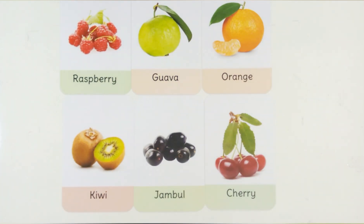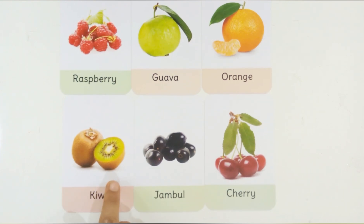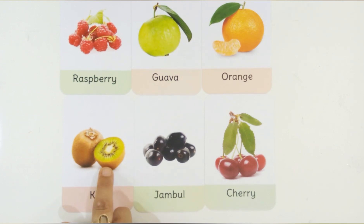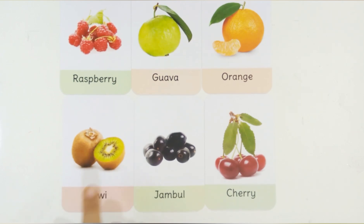This is Orange. Orange is a fruit. K for Kiwi. This is Kiwi. Kiwi is a fruit.